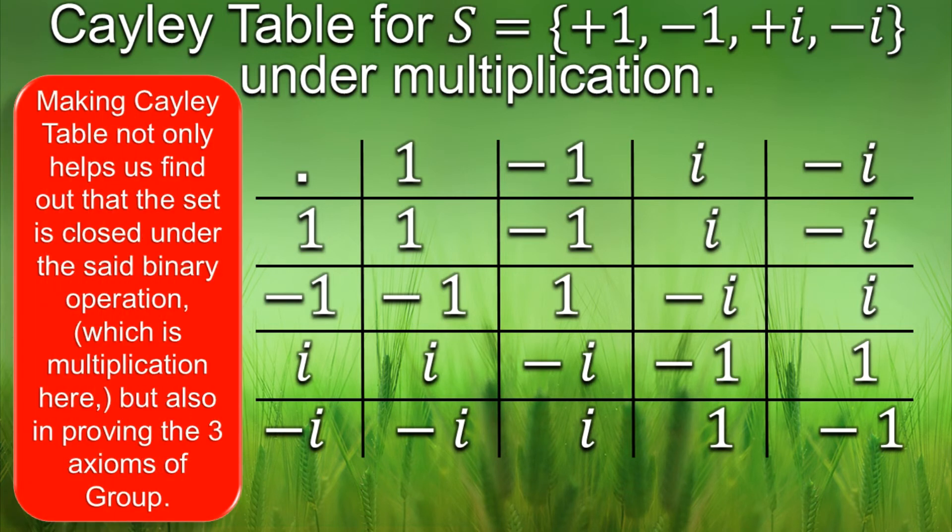The Cayley table does not only serve the purpose of finding out whether a set is closed under binary operation or not but it also helps proving associativity, finding identity element for the set and as well as the inverse of every single element in the set.